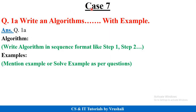Suppose the next question is 'write an algorithm with example.' In Data Structure, algorithm means steps — always write the algorithm stepwise: Step 1, Step 2, Step 3. Step 1 is always 'Start' and the last step is always 'Stop.' In between, write down the logic. 'With example' means you have to solve a particular example or write down the example stepwise.